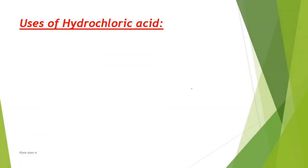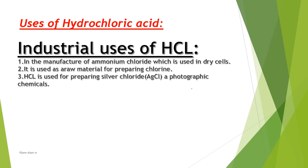Uses of Hydrochloric Acid. Industrial uses of hydrochloric acid. Number 1: In the manufacture of ammonium chloride, which is used in dry cells. Number 2: It is used as a raw material for preparing chlorine.